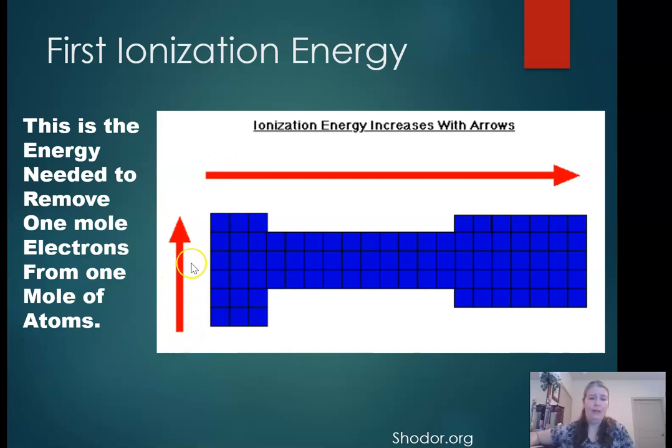The same trend for electronegativity follows for ionization energy. It increases as I go up. It increases as I move towards the right. Over here where there are metals that form cations, it is easy to ionize, to remove one electron from sodium or potassium. Over here where I have atoms that form anions like my halogens or my group 16, oxygen, sulfur, those have very high ionization energies. It's much more difficult to pull the electron off. Hence we form anions.